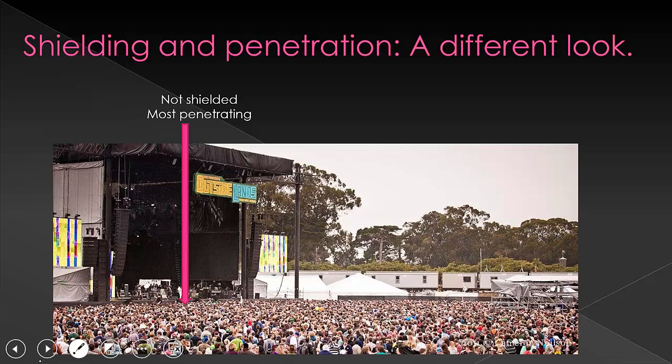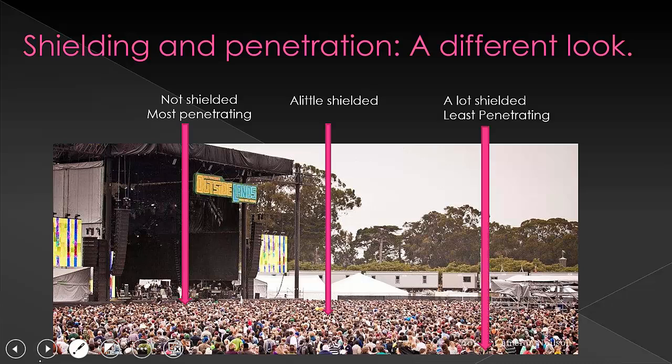Now imagine being halfway back. The people in front of you are in your way, yet you can still feel a pull of the stage — yet you're shielded from it. Now imagine you're way in the very back of a very large concert. You are the most shielded from the stage. There are a lot of people between where you're sitting and the stage, and you're only slightly attracted to the concert because you can't even see what's happening very well. This is like being an electron in the outermost energy level of a large atom — it is very shielded and not very penetrating.